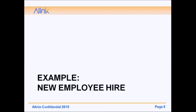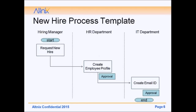Now we will take an example of a new employee hire. The first step is to create a new hire process template. We assume three departments are involved: a hiring manager who requests a new hire sends the request to HR. HR creates an employee profile if approved; if not, the process is cancelled. Otherwise, the process is forwarded to IT, which can also approve and create an email ID.